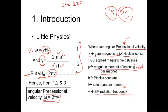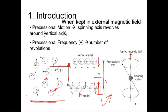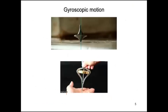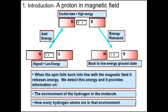When the angular precessional velocity omega matches the frequency of the electromagnetic radiation, the electromagnetic radiation is absorbed by the nuclei in the ground state. These are the nuclei pointing in the direction of the external magnetic field and are considered to be at low energy.